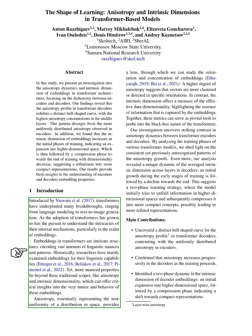In the past, researchers have mostly looked at embeddings for their language capabilities. However, there are other aspects to consider, such as anisotropy and intrinsic dimensionality, which can give us important insights into the nature and behavior of these embeddings.